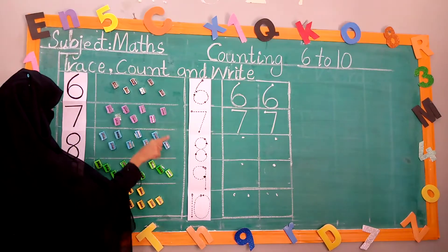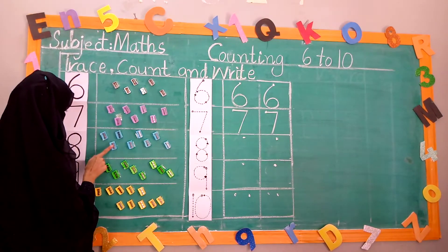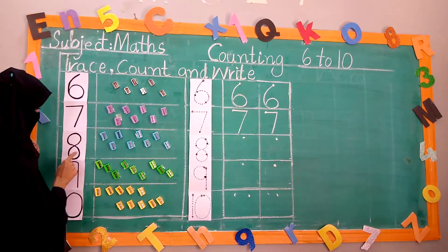Now, 8. How many sharpeners are here? Count with me. 1, 2, 3, 4, 5, 6, 7, 8. Eight sharpeners.